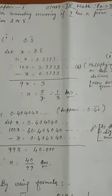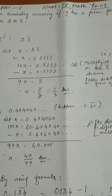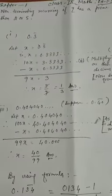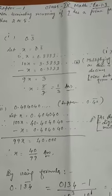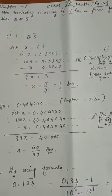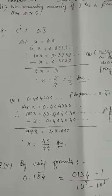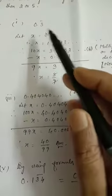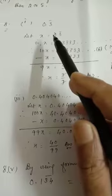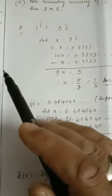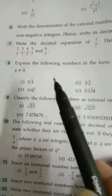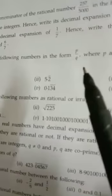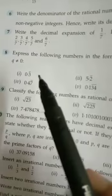Good morning everyone. Today I am going to teach class 9 mathematics. I am going to continue sums of exercise 1.3, that is the first chapter, from sum number 8. So you can see the sum. You have to change recurring decimals into fractions, that is in the form p by q. So let us see question number 8. Express the following numbers in the form p by q, where p and q are both integers and q is not equal to 0.